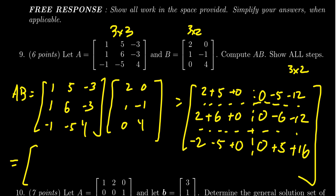In the 1,1 position we get two plus five which is seven. In the 1,2 position we get zero minus five minus twelve which is negative seventeen. In the 2,1 position we get two plus six plus zero which is eight. In the 2,2 position we get zero minus six minus twelve which is negative eighteen. In the 3,1 position we get negative two minus five plus zero which is negative seven. In the 3,2 position we get zero plus five plus sixteen which is twenty-one. This is the product of the two matrices.